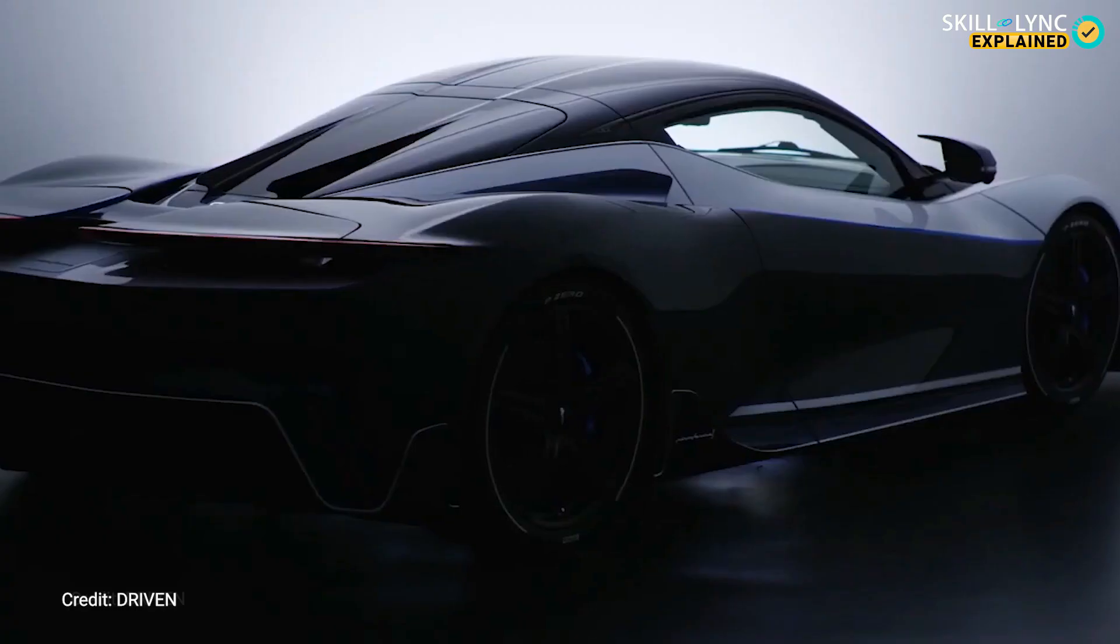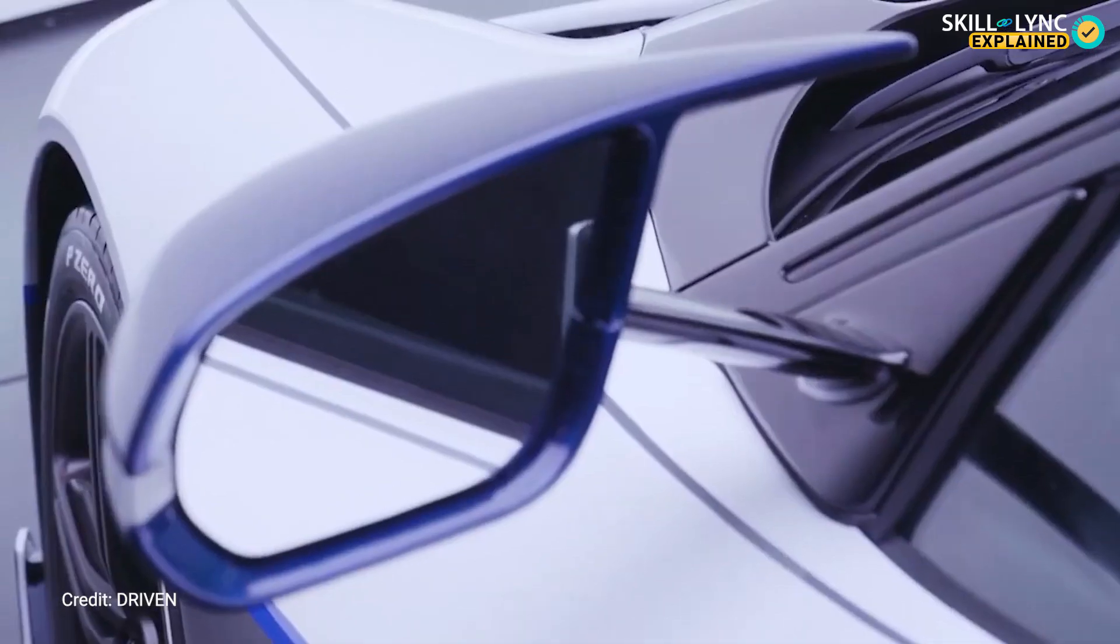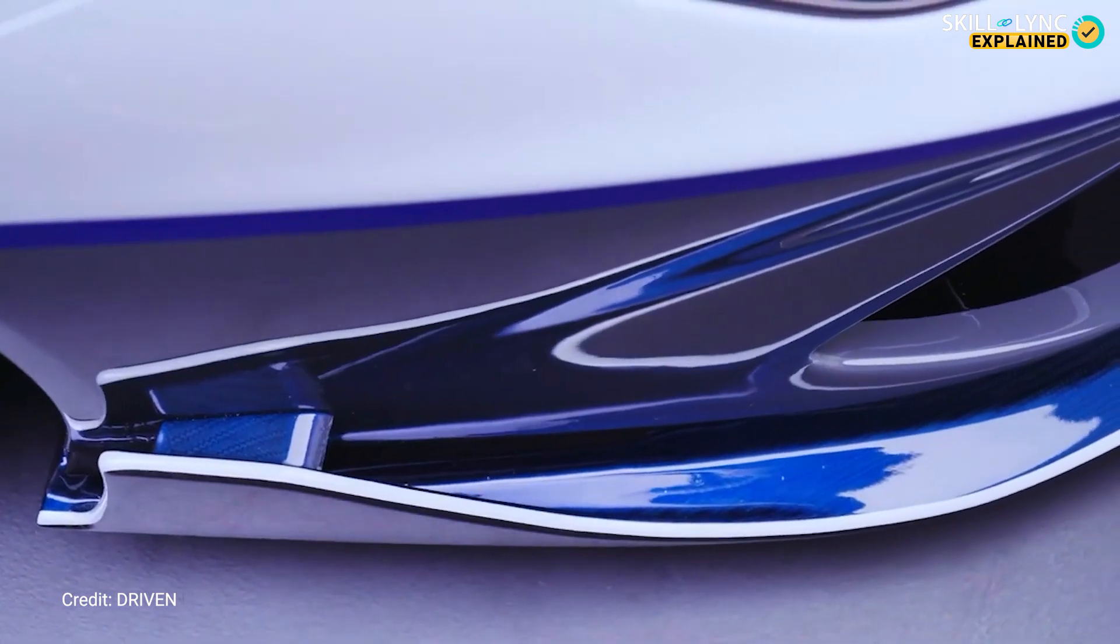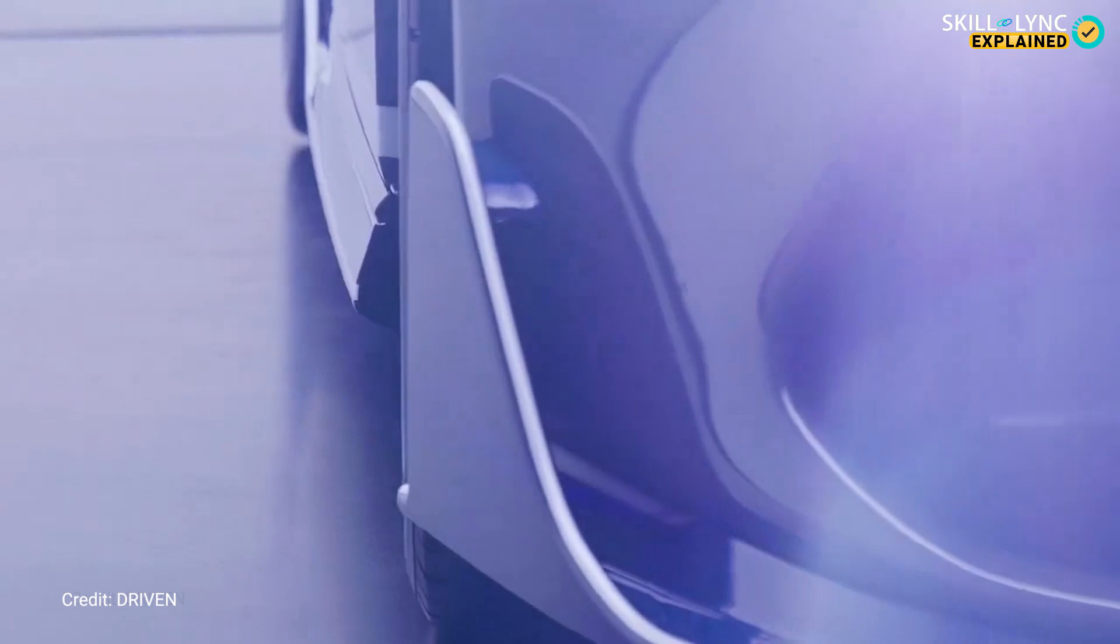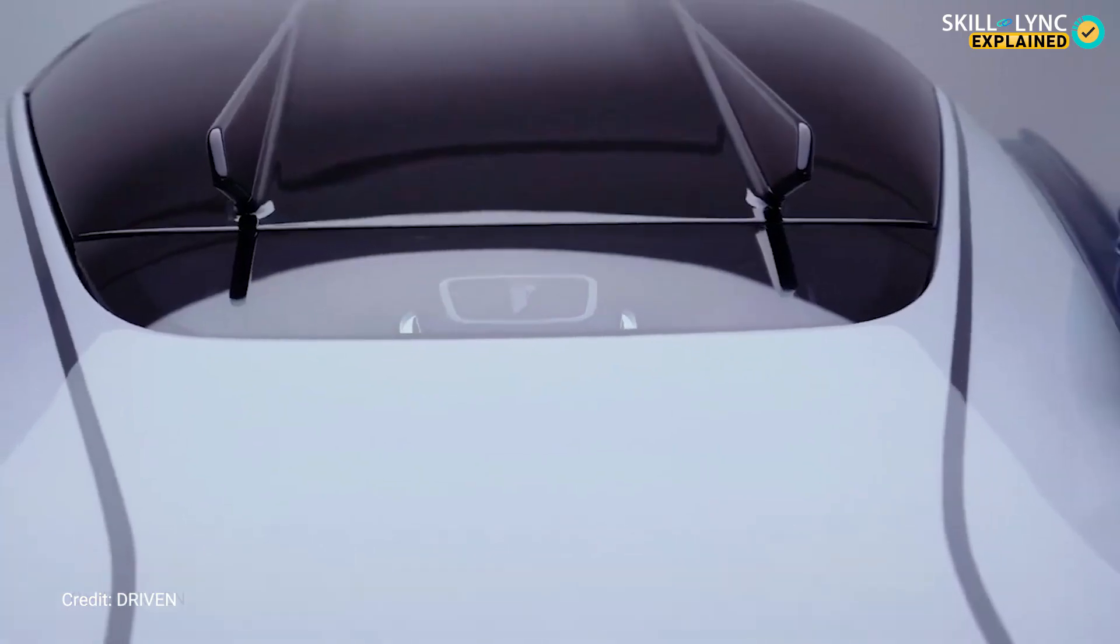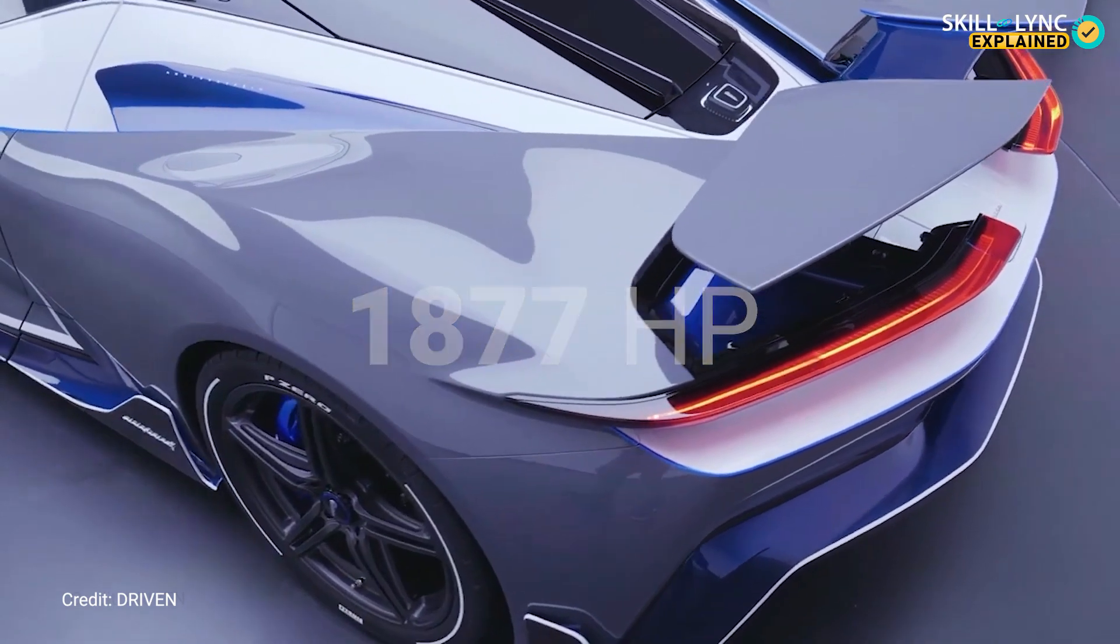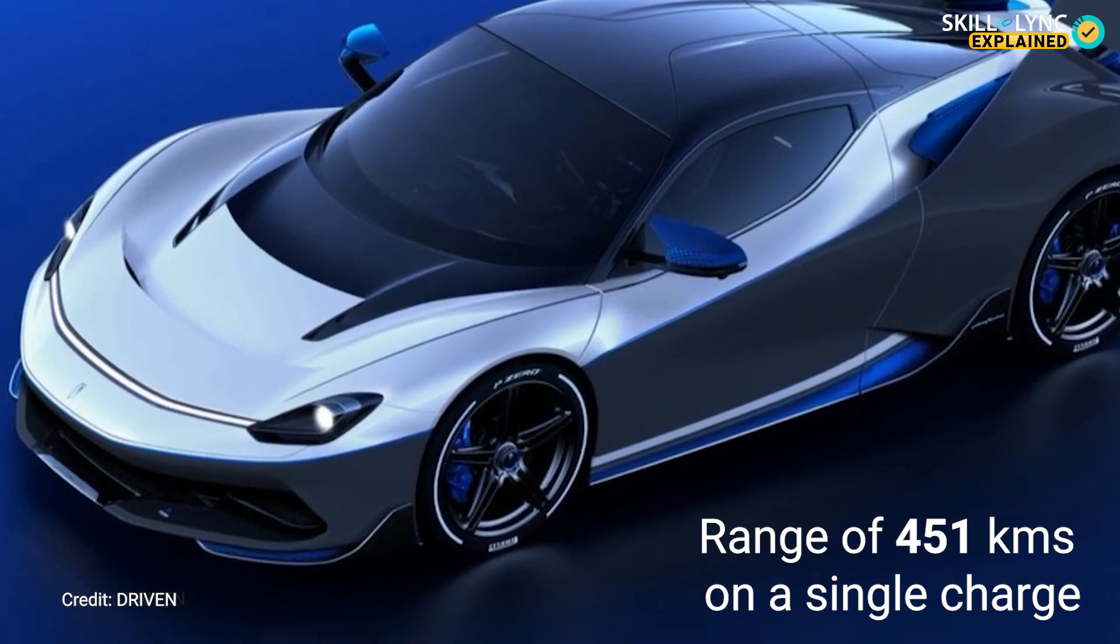One such hypercar is the Pininfarina Battista, manufactured by Automobili Pininfarina, a subsidiary of Mahindra Group. The Pininfarina Battista is an electric sports car having four individual motors at each wheel giving a combined output of 1877 horsepower and a range of 451 km on a single charge.